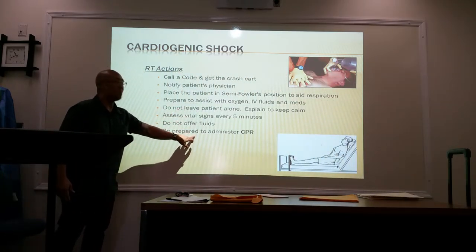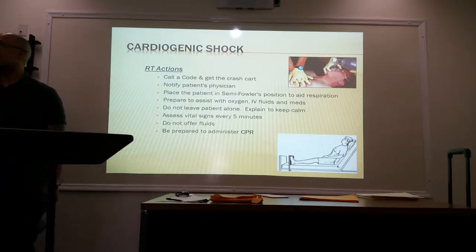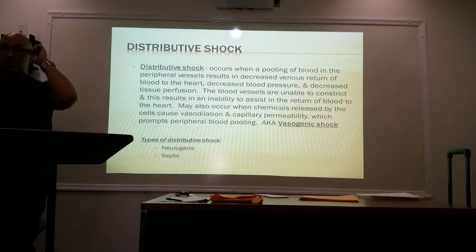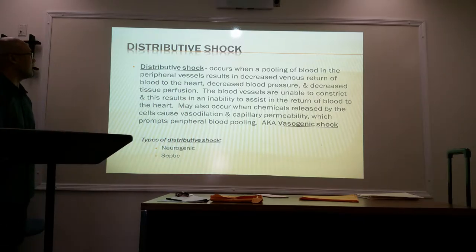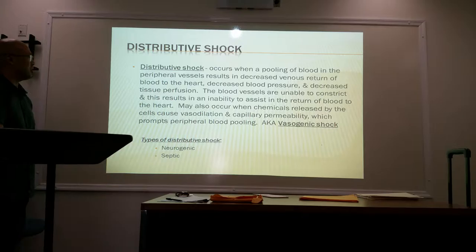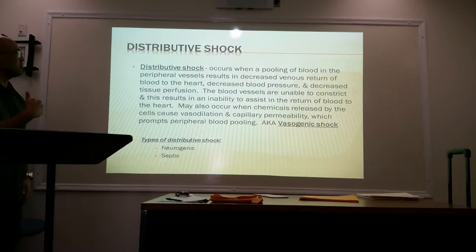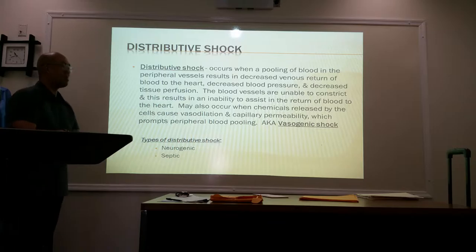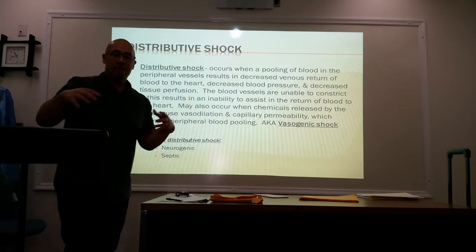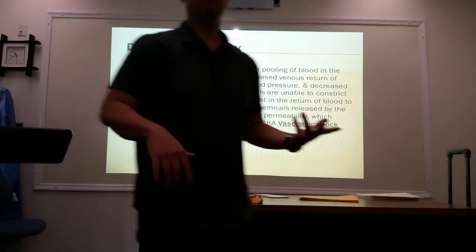You have to be ready to perform CPR. Distributive shock occurs when a pooling of blood in the peripheral vessels results in decreased venous return of blood to the heart, decreased blood pressure, and decreased tissue perfusion. The blood vessels are unable to constrict, resulting in an inability to assist in the return of blood to the heart. It may also occur when chemicals released by the cells cause vasodilation and capillary permeability, which prompts peripheral blood pooling.